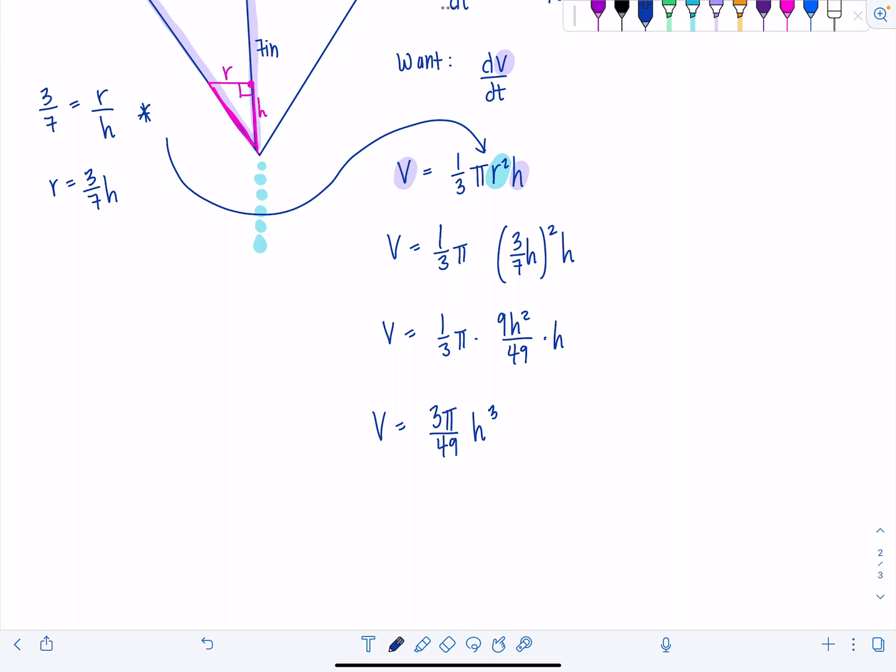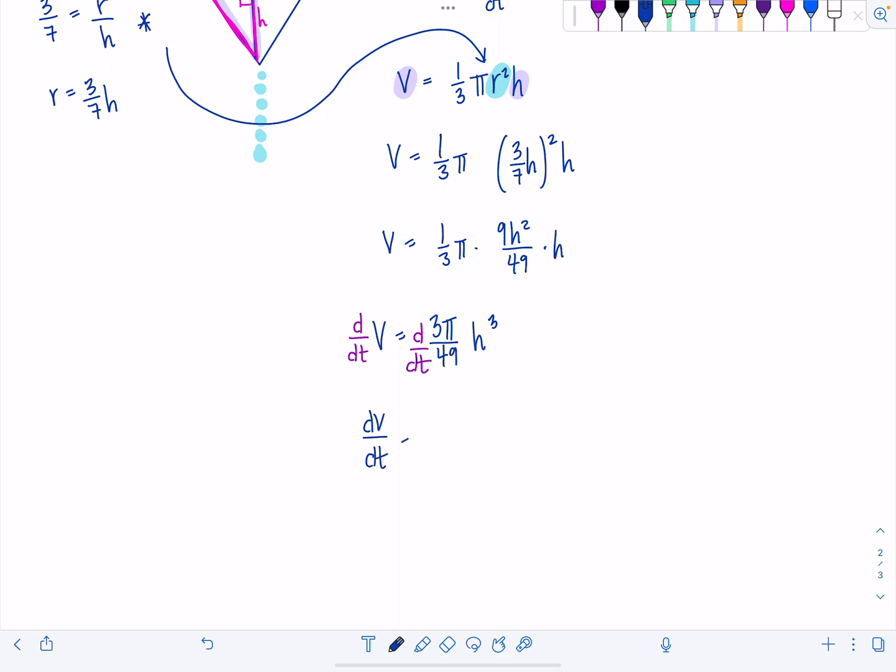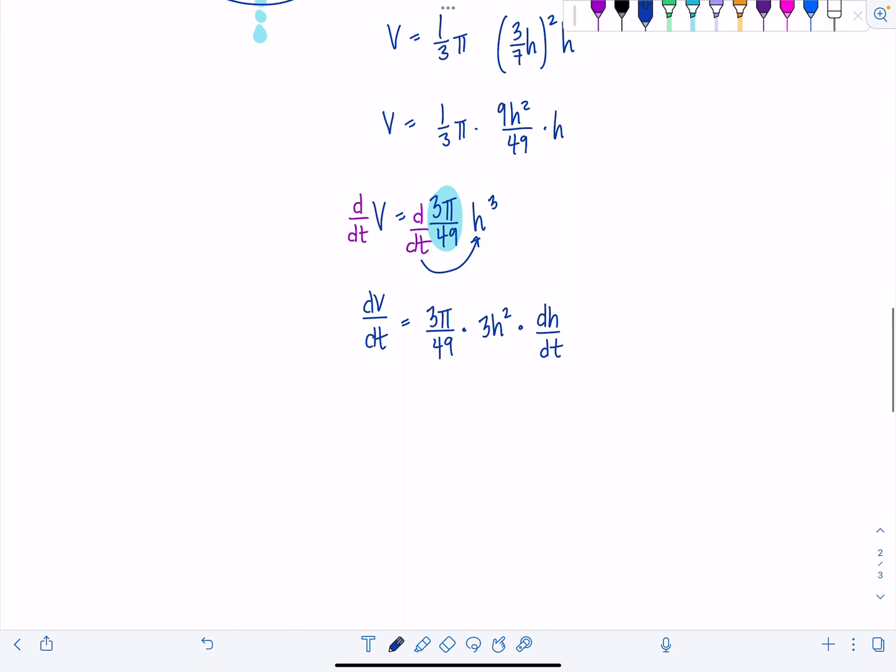Good. Now we can go ahead and take the derivative with respect to t. So always write d/dt, d/dt. On the left hand side, we're just going to have dV/dt. 3π over 49, that's just a constant. No need for the product rule. When you have a constant, just bring it down. It comes along for the ride. And now I'm going to take the derivative of h³ with respect to t. So derivative of h³ is going to be 3h² times dh/dt.